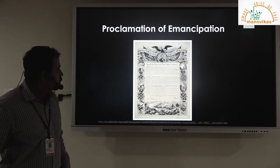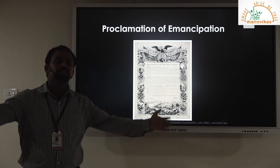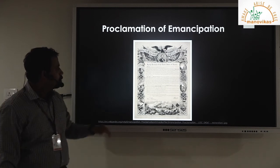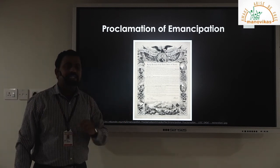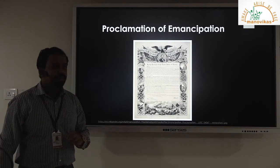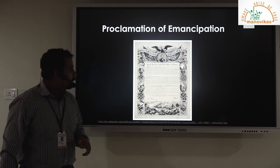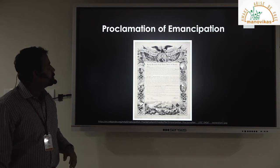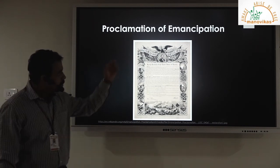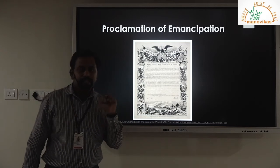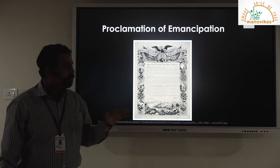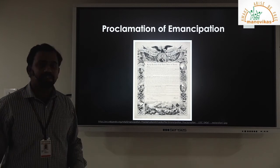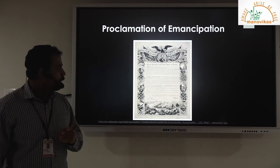With this, the American Civil War ended. The Civil War was fought to reunite the United States of America, but it was also fought to free slaves. In 1863, when the war was still going on, the government of America under President Abraham Lincoln made a proclamation called the Proclamation of Emancipation. Emancipation means freedom. As per this proclamation, slavery was banned, every person was considered equal, and every right was given to each and every person of the United States of America.